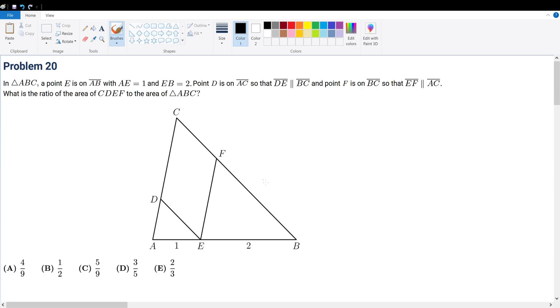Problem 20. In triangle ABC, point E is on AB such that AE is 1, EB is 2, point D is on AC so that ED is parallel to BC, and point F is on BC so that EF is parallel to AC.